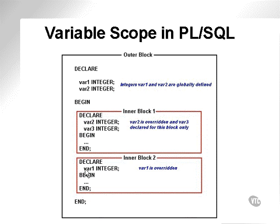In inner block 2, var1 actually temporarily overrides the value and the definition of var1 from the outer block. At the end of outer block 2, the initial outer block definition of var1 will again be reinstated with both its definition and value. It's very important to understand variable scope in any programming language.